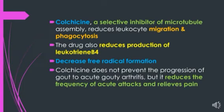Intra-articular corticosteroids can be used in refractory cases. Colchicine is now indicated for prophylaxis of recurrent attacks of gout, arthritis, acute Mediterranean fever, sarcoid arthritis, and hepatic cirrhosis.